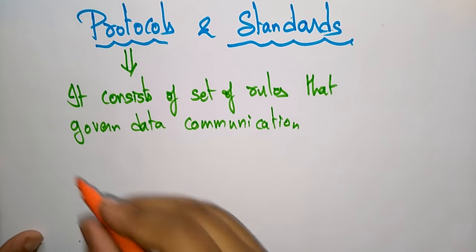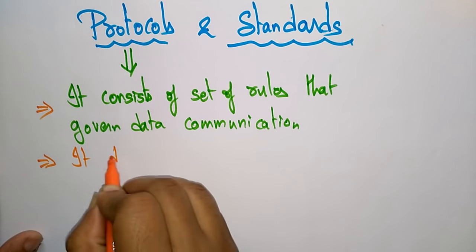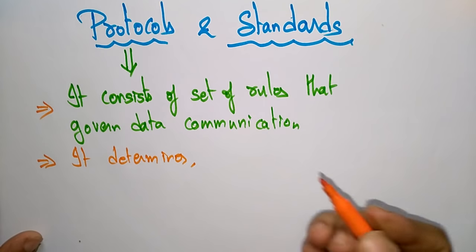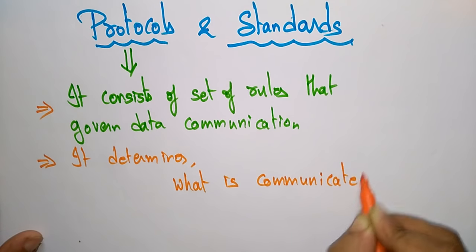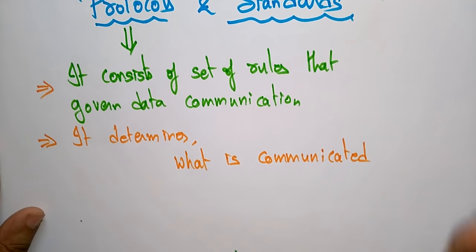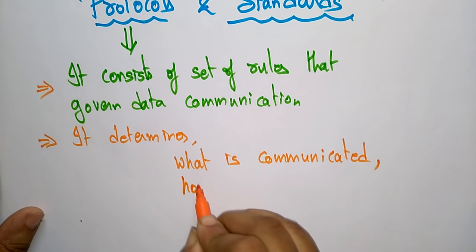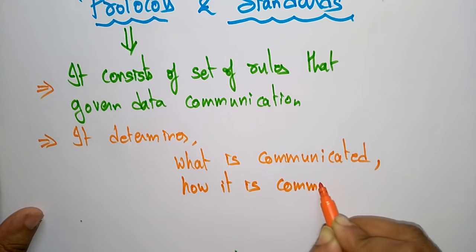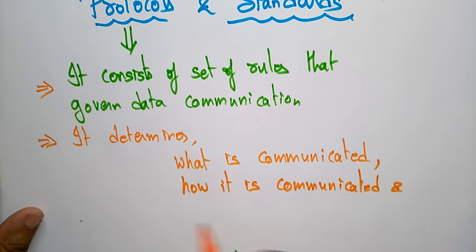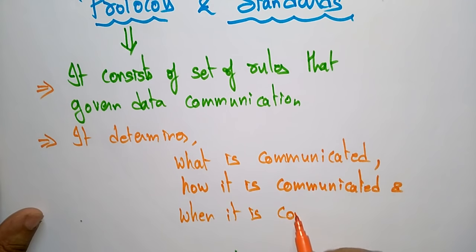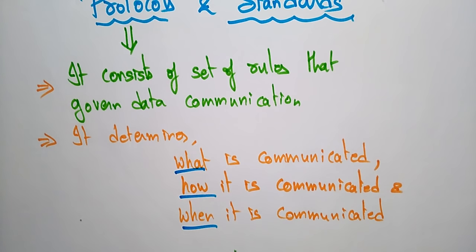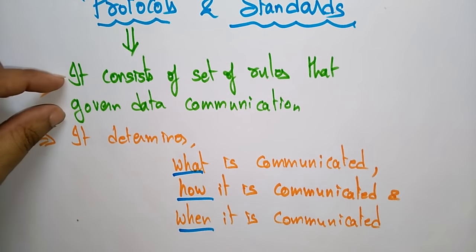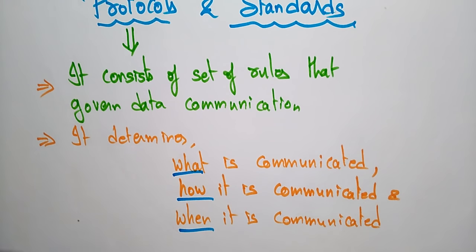So what exactly does this protocol determine? It determines what is communicated, how it is communicated, and when it is communicated. These are the set of rules — what, how, and when — that the sender and receiver have to follow. The protocol determines all three of these.